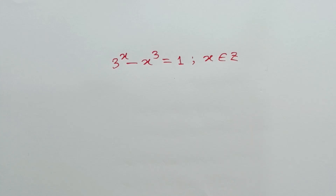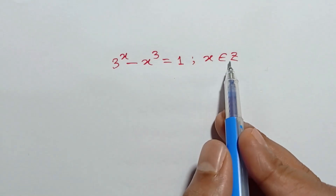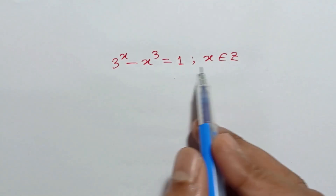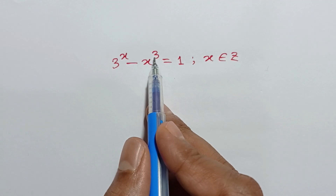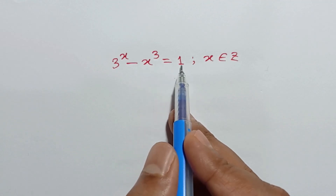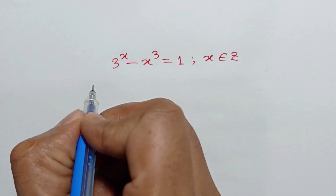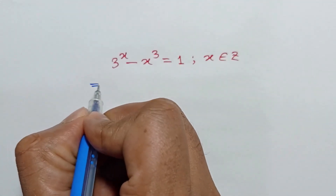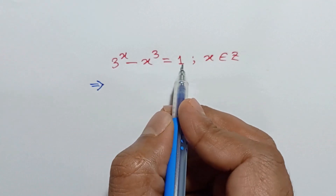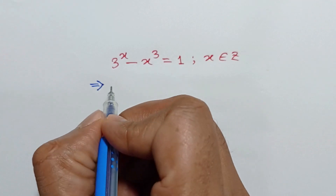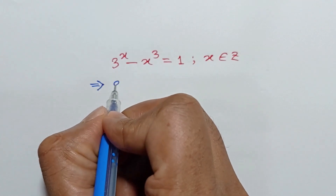Hi everyone. In this video I am going to show how to find the integer solution of 3 to the power x minus x cube is equal to 1. Taking this x cube to the right side, we will have 3 to the power x is equal to x cube plus 1.